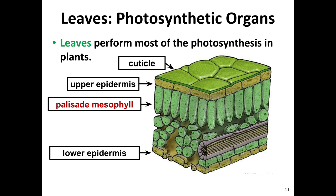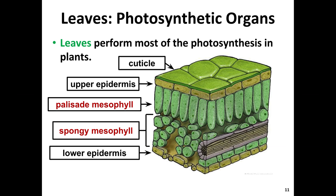Next is the palisade mesophyll and the spongy mesophyll. These two layers of mesophyll are labeled in red because those cells have the most chloroplasts in them. A chloroplast is the organelle inside plant cells where photosynthesis is going on. It's within the chloroplasts found in the mesophyll cells that photosynthesis actually occurs.